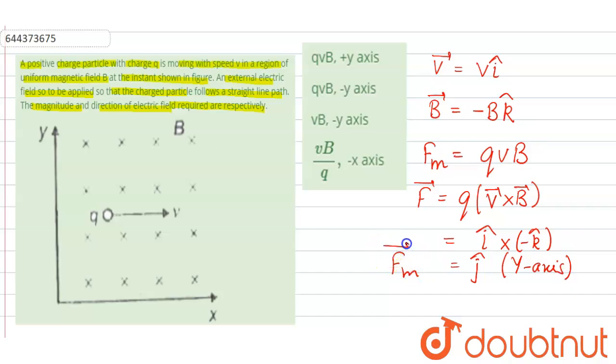So the magnetic force experienced is of magnitude qvB and is along positive y-axis. Now we are given that we have to find the magnitude and direction of electric field so that particle follows a straight line path.